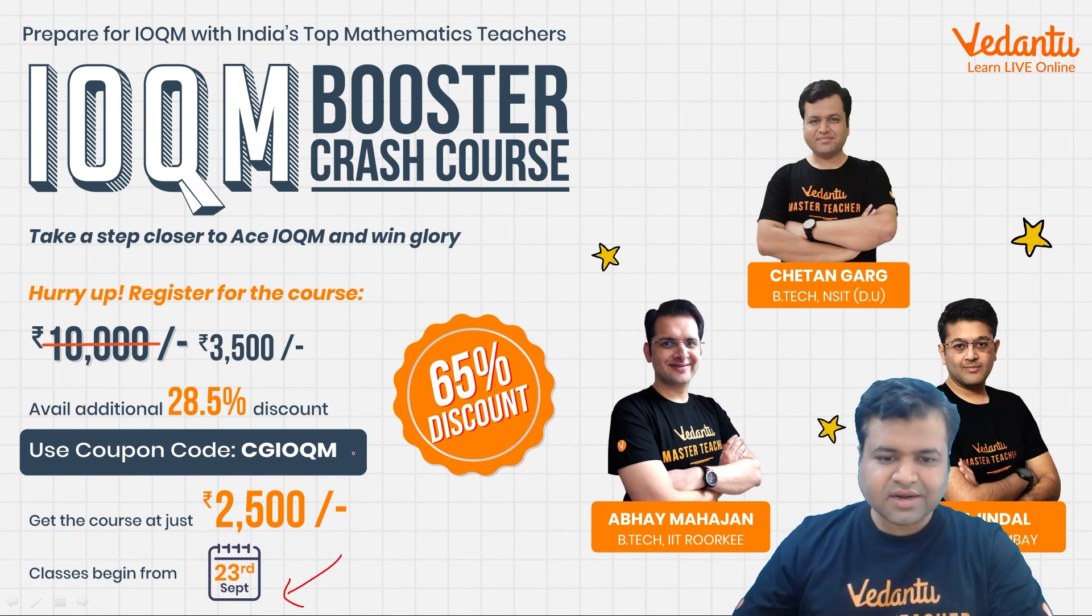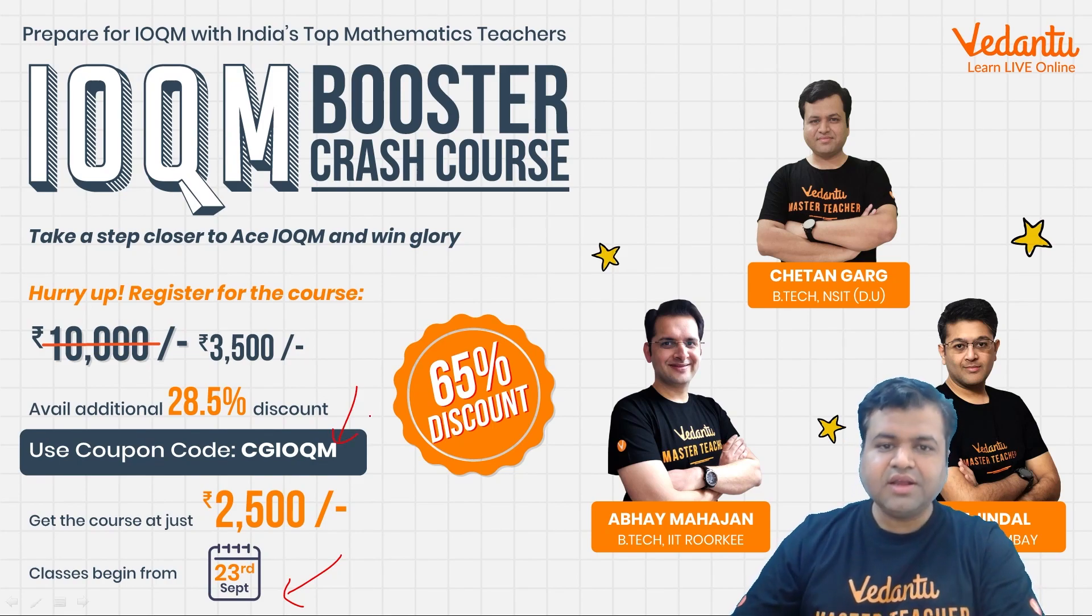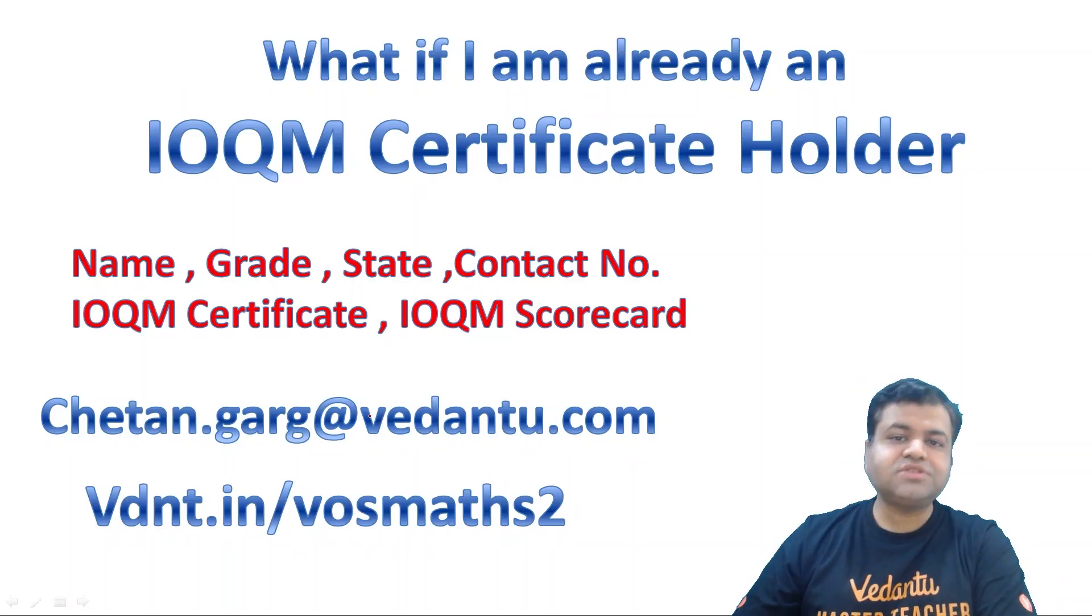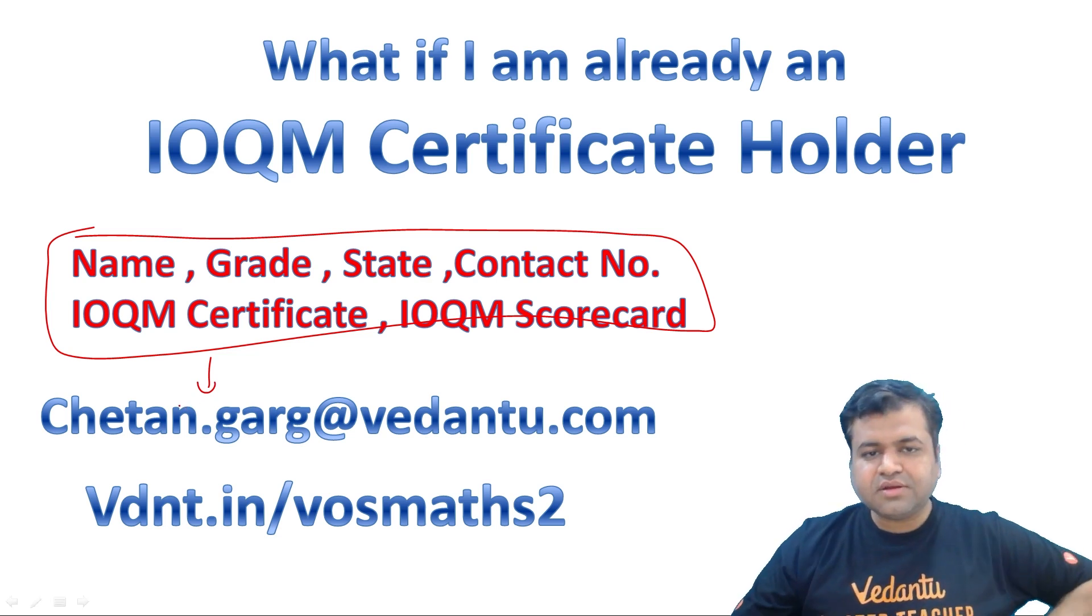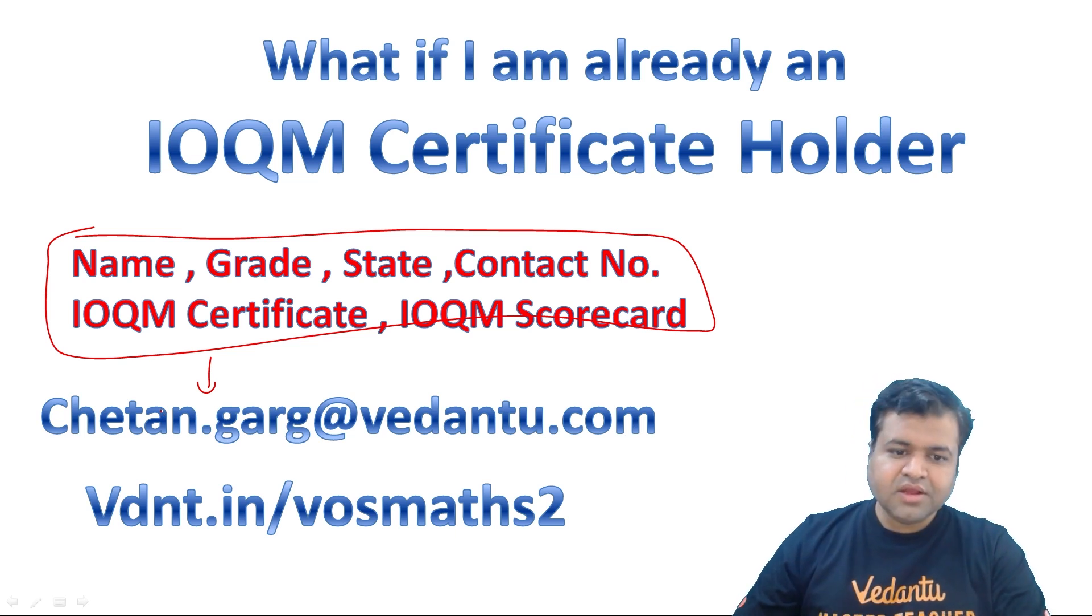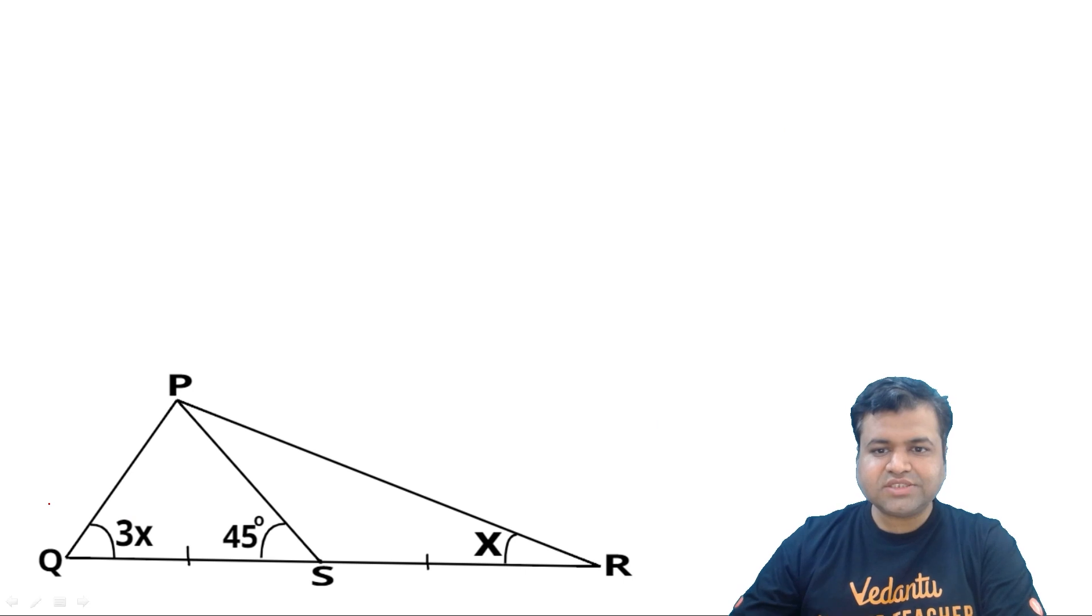You can register and get a discount by applying this coupon. And if you are already an IOQM certificate holder, then you can mail me these details on this email ID. You will be enrolled according to RMO or INMO in the batch according to your certificate. And if you want to prepare for any other Olympiad exam, or KVPY, NTSE, or Junior Science Olympiad, then kindly fill up this Google form. So let's start the session.